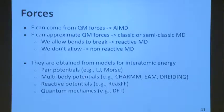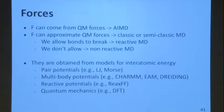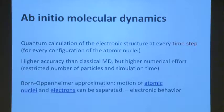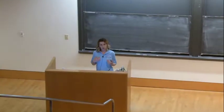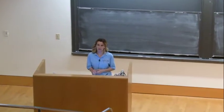Classical MD is also used for combustion, and there are different force fields available. For example, CHARMM is a force field able to describe interactions between carbon and hydrogen in hydrocarbons. Ab initio MD involves very expensive calculations — the timescale and the size are very limited, so it's not what we'll use here. But I wanted you to know that some people do use ab initio MD.